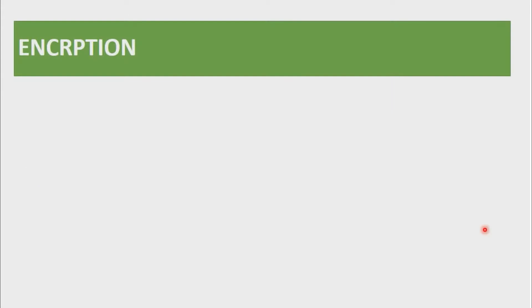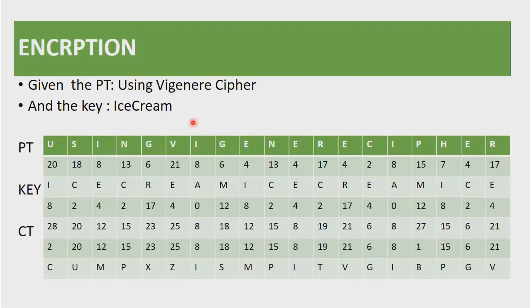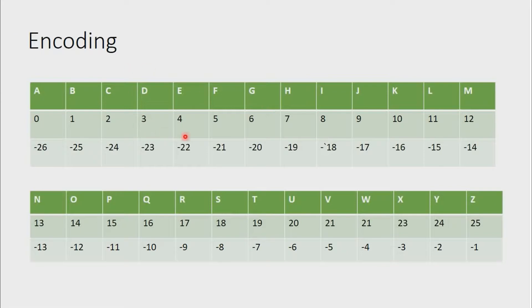In this part of the video we will be encrypting a plain text element using the Vigenère cipher. Given the plain text 'using Vigenère cipher' — the message we want to send — and our key being 'ice cream', here is how it works. The first step is to list down all the elements of the plain text. In the first row I have listed 'using Vigenère cipher'. The second thing we do is encode this plain text element using mod 26, so U is 20, S is 18, I is 8, and so on.